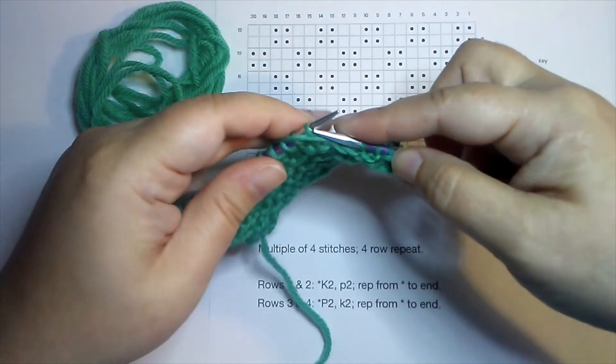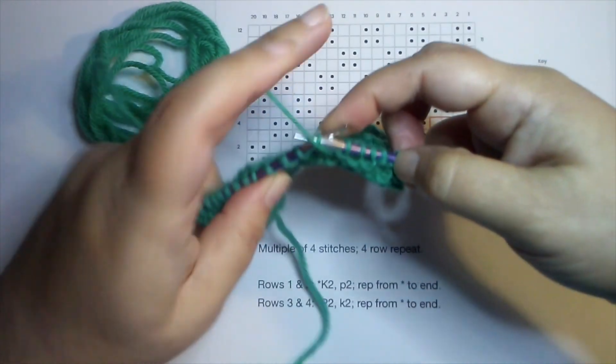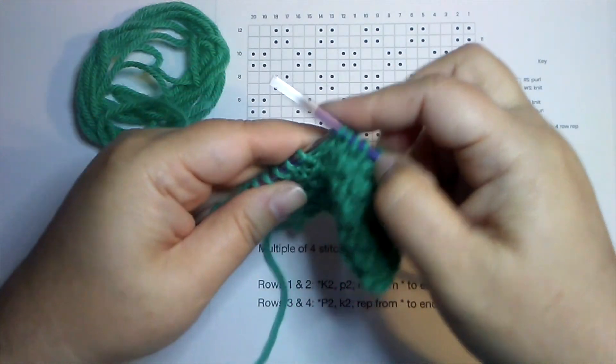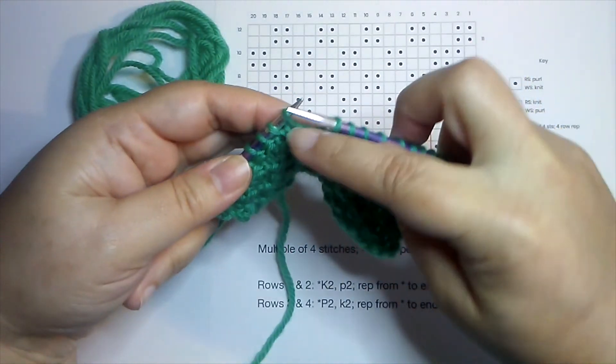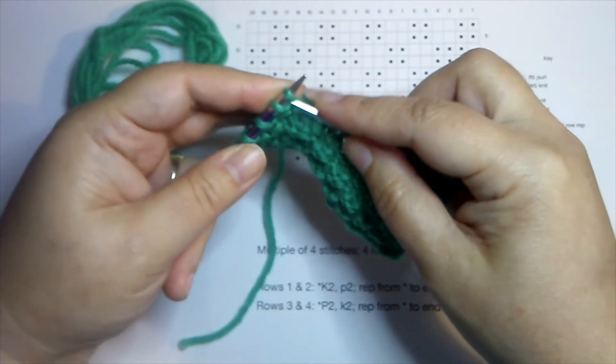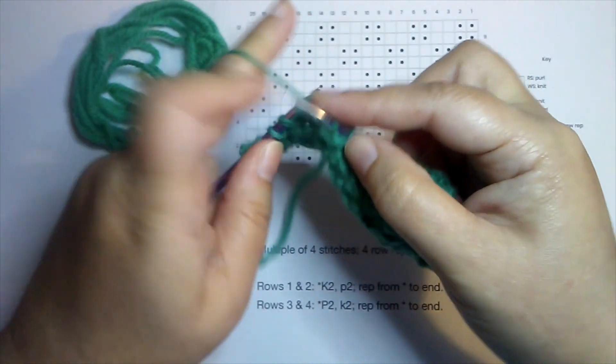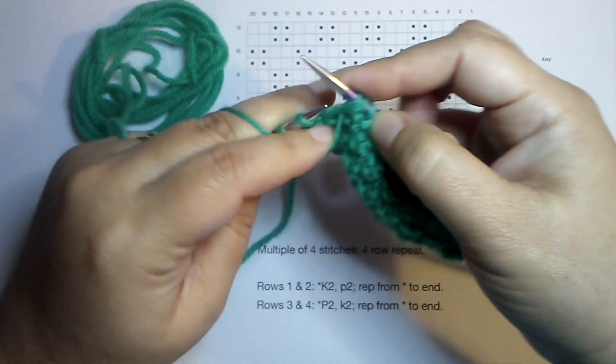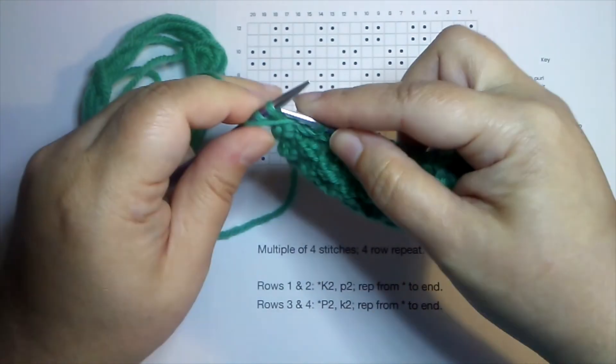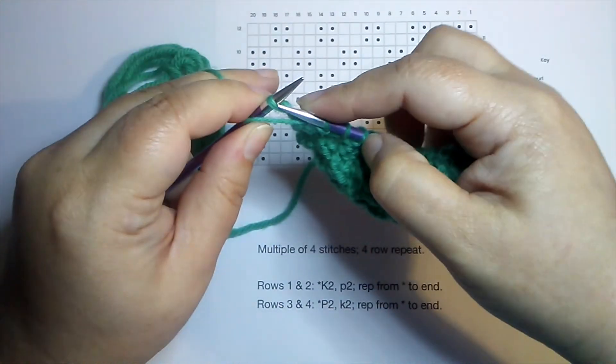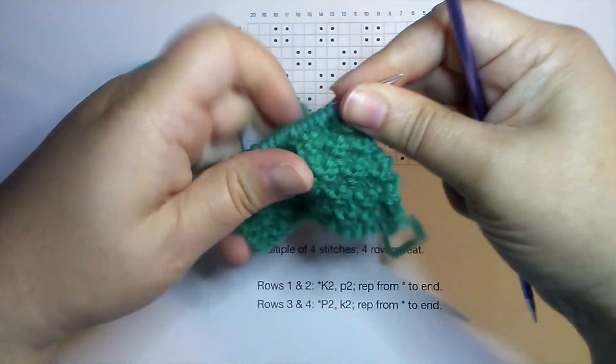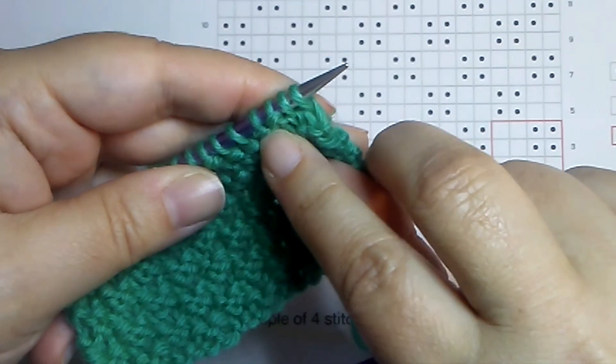We switch this pattern up every two rows and it gives us those little boxes. So on the right side of the work, if I didn't have my pattern, all I have to remember is if I'm on the right side I am breaking that pattern. So if I see a knit stitch, which I do right here, I'm going to purl it. And if I see purl stitches, I'm going to knit them.